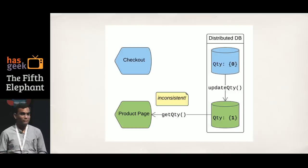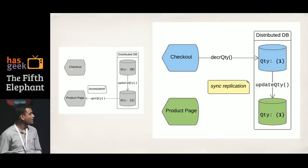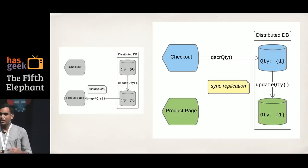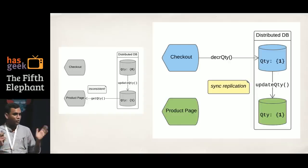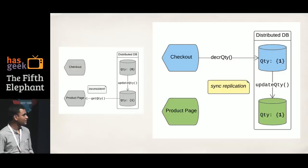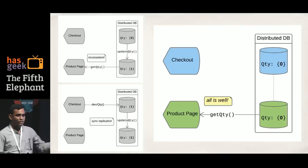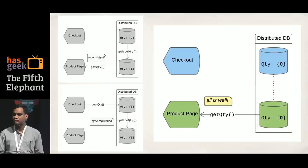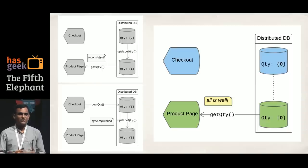One simple solution is to make the replication from master to slave synchronous — that is, even before the decrement quantity call returns, you make sure the slave is also updated. Now if a get-quantity call happens, it will get either one or zero, never anything inconsistent. Problem solved. But we've now introduced a new problem: what happens if the link between the master and the slave is down?